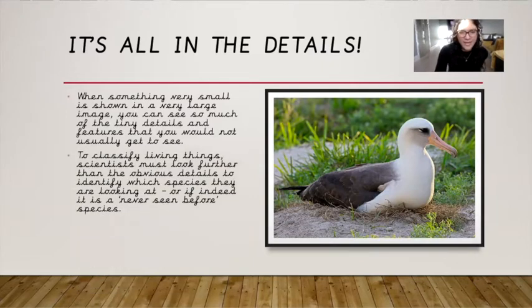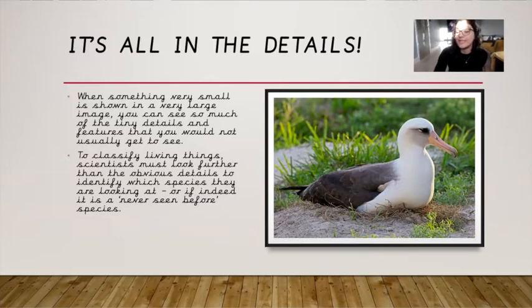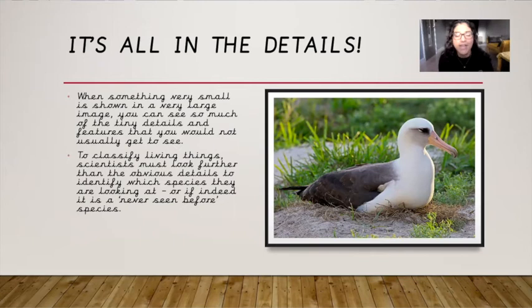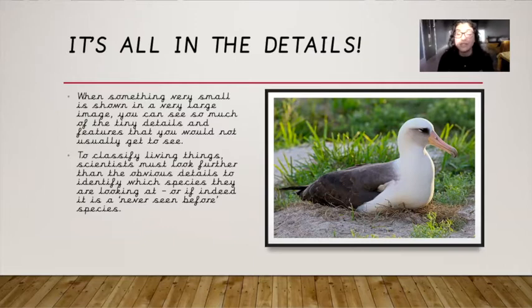To classify living things, scientists must look further than the obvious details to identify which species they are looking at, or if indeed it is a never-seen-before species. And remember, when scientists are classifying living things and putting them into groups, the reason why they look at the tiny details is because it's those details that make one living thing different to another.